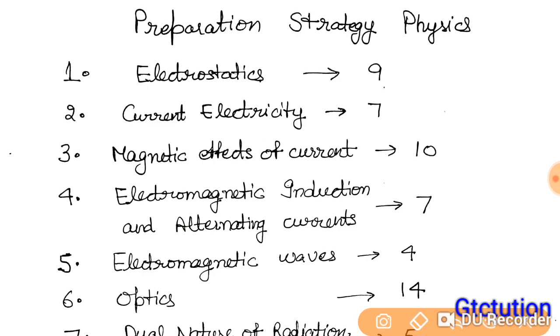The first chapter is Electrostatics. We can talk about 9 marks. This is a medium-moderate level chapter. Then Current Electricity, a medium chapter, not difficult or very easy. The third chapter is a little lengthy. It will be 10 marks. The fourth unit is easy, it will be around 7 marks.